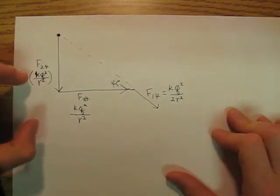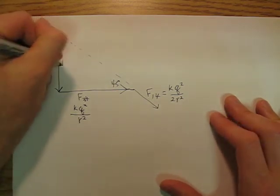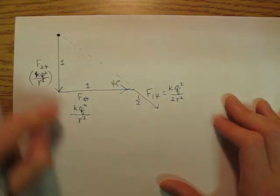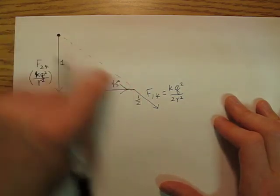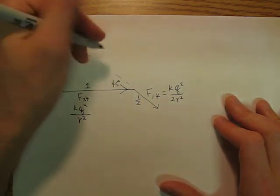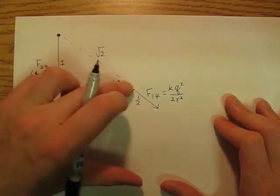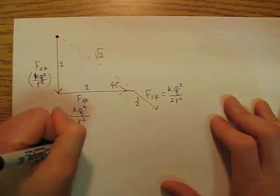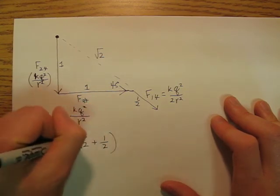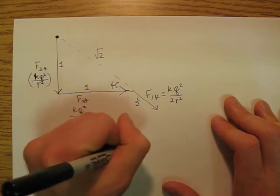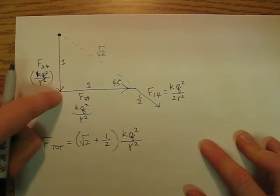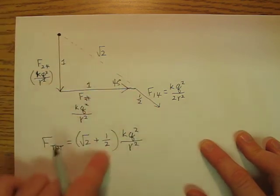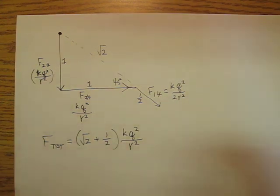Okay so now let's forget the k q squared over r squared for a second and let's just call that one, call that one, call that one, and call that one half. Well if this is one and this is one, how long is this? Well it's the square root of two. And so this is square root of two and this is one half. So my force total is going to be root two plus one half of k q squared over r squared. So this one plus this one plus one makes square root of two, plus one half makes square root of two plus one half. So that's my coefficient out front and then there's my k q squared over r squared.